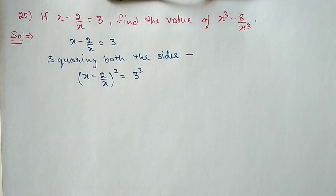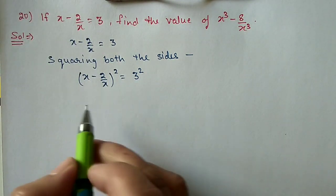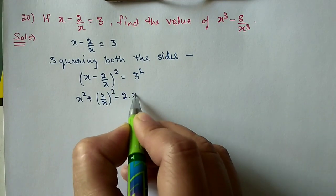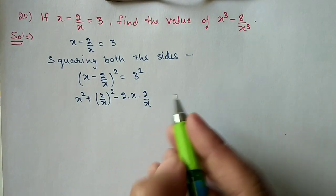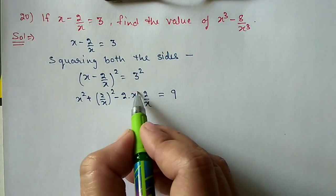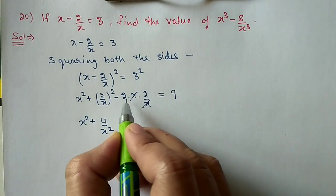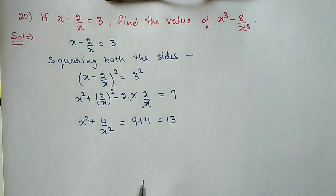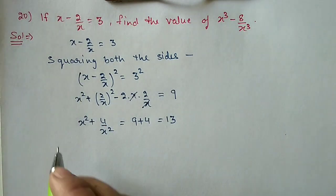Question 20: If x minus 2 by x is equal to 3, find the value of x cube minus 8 by x cube. First we square the given equation. After squaring both sides using a minus b whole square formula — a square plus b square minus 2ab — we get x square plus 4 by x square minus 2 into x into 2 by x equals 9. The x terms cancel leaving 4, so x square plus 4 by x square equals 9 plus 4, which is 13.